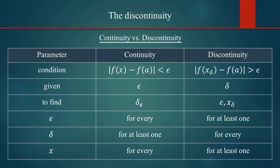There are different quantifiers for epsilon, delta, and x. In continuity, the condition must hold for every epsilon; in discontinuity it must hold for at least one epsilon — and if it holds for epsilon it holds for all smaller values. For continuity, for every epsilon you find at least one delta. For discontinuity, you find epsilon and the condition |f(x_delta) − f(a)| > epsilon must hold for every delta, with at least one x_delta found for each delta.